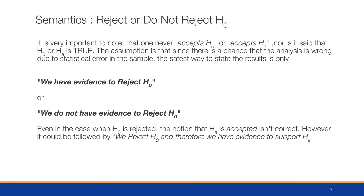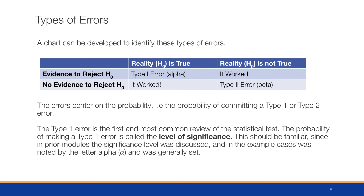It is very important to note that one never accepts the null hypothesis or accepts the alternative hypothesis, nor is it said that H₀ or Hₐ is true. The assumption is that since there is always a chance the analysis could be wrong due to statistical errors in the sample, the safest way to state results is: 'we have evidence to reject H₀' or 'we do not have evidence to reject H₀.' Even when H₀ is rejected, it could be followed by: 'we reject the null hypothesis and therefore have evidence to support the alternative hypothesis.'